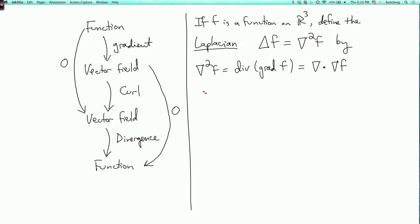If you write that out in components and work out what it is, well remember the gradient of f is the vector field f_x, f_y, f_z. So the divergence of this is where you take the derivative of the first component with respect to x, so we get f_xx. Then you add the derivative of the second component with respect to y, so it's f_yy. And then finally you add the derivative of the third component with respect to z, so it's f_zz. So this is the Laplacian.